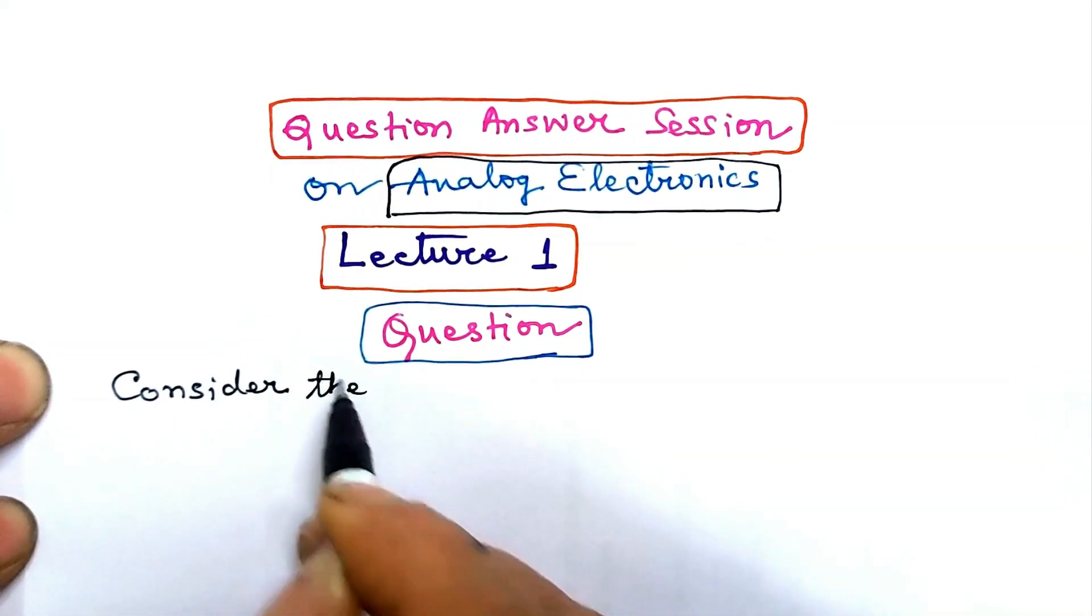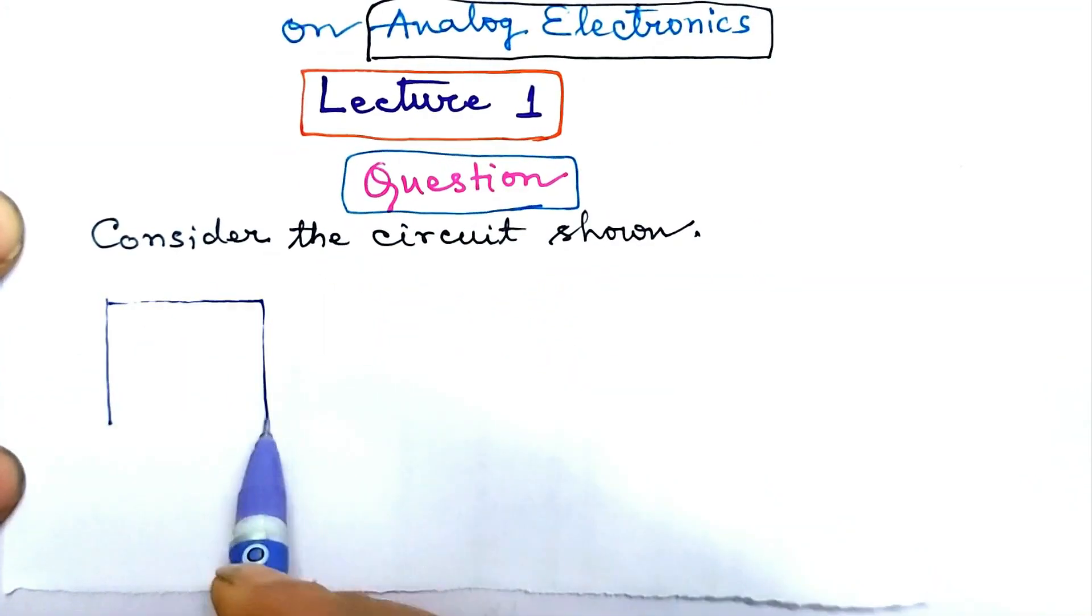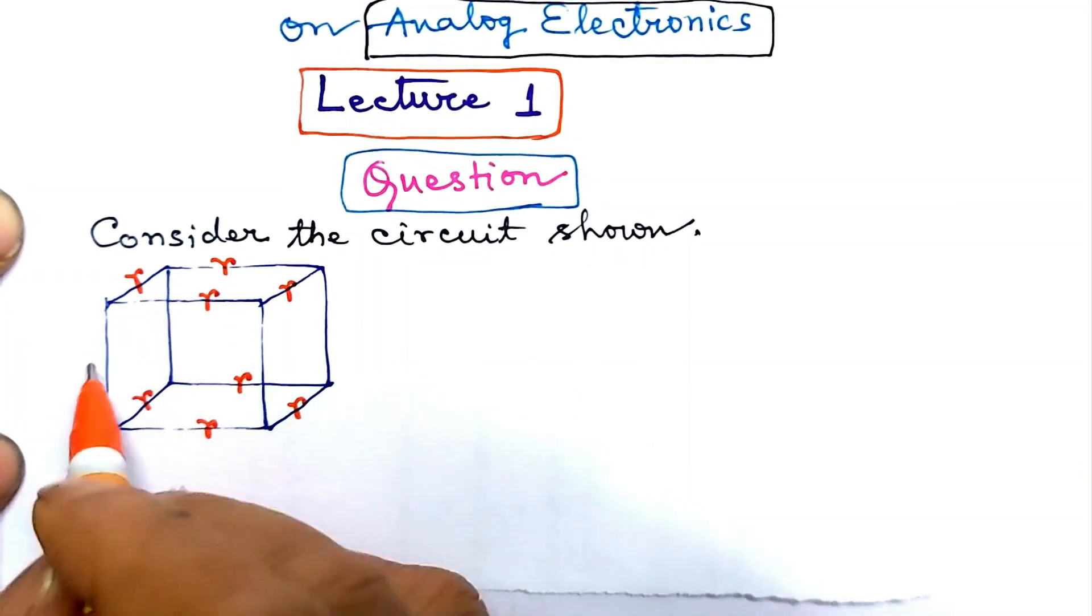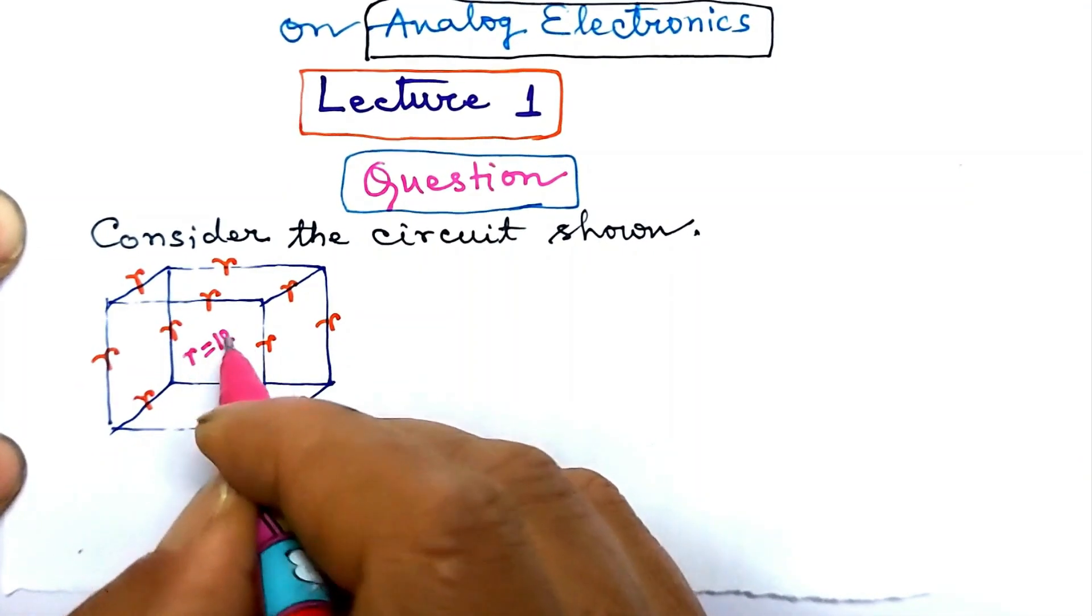Consider the circuit shown. This is a cubic structure, the resistance of each arm being r, where r is 120 ohm.